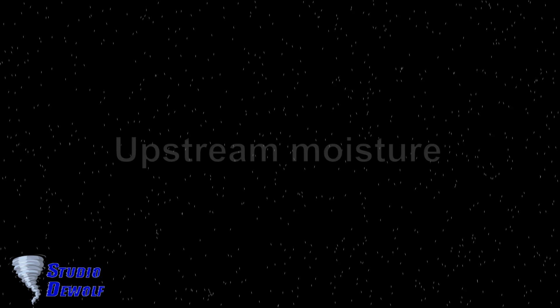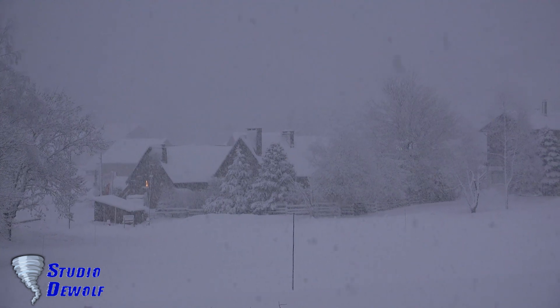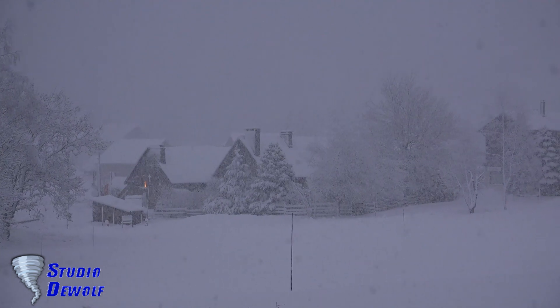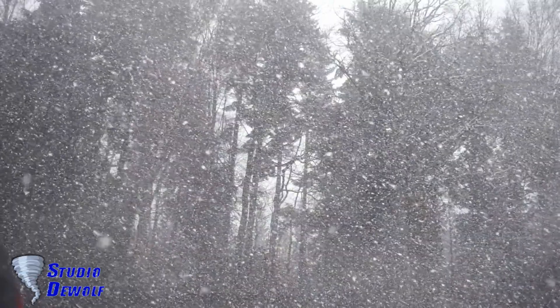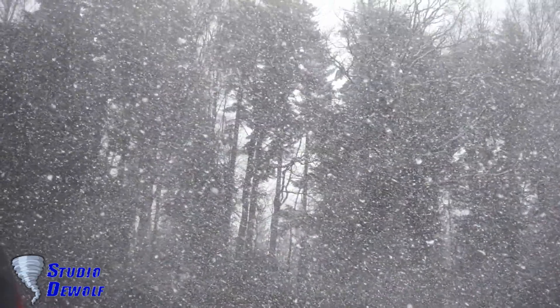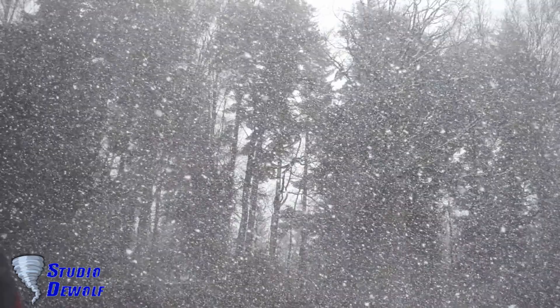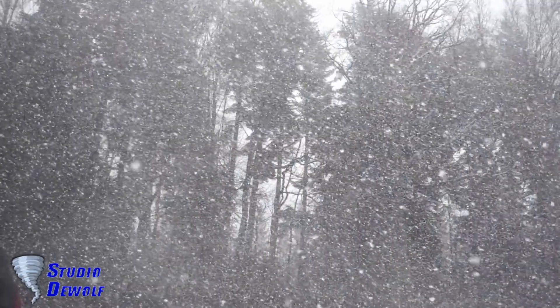Upstream moisture. A lower upstream relative humidity makes lake effect condensation, clouds, and precipitation more difficult to form. The opposite is true if the upstream moisture has a high relative humidity, allowing lake effect condensation, cloud, and precipitation to form more readily and in a greater quantity.